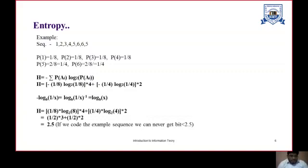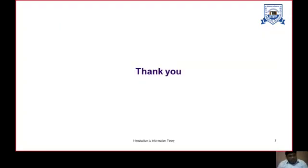This means that if we code the example sequence 1, 2, 3, 4, 5, 6, 6, and 5, we can never get a number of bits less than 2.5. That is entropy. So this is all about information theory. Thank you.